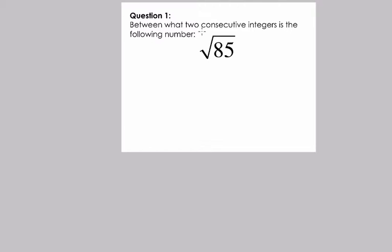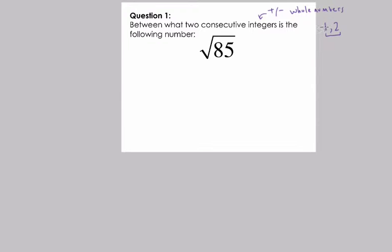In this problem, they ask: between what two consecutive integers is the following number? Consecutive integers — what does that mean? Well, consecutive means numbers in a row, and integers are positive or negative whole numbers, including zero. Some examples of consecutive numbers that are integers would be numbers like one and two. These two numbers are literally right next to each other and there are no integers between them, so they're consecutive.